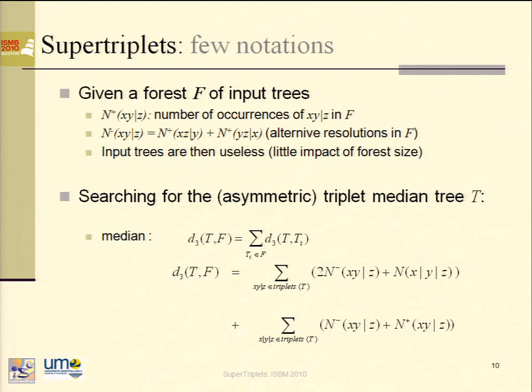So, how many times there is a match — and we call this n-plus — and how many times there is an alternative release in conflict — n-minus.